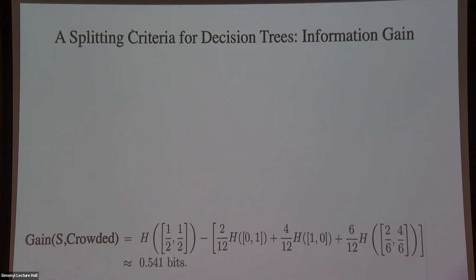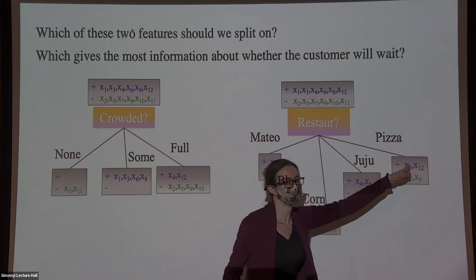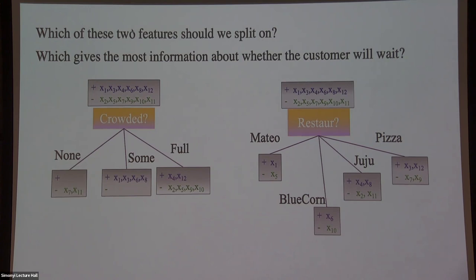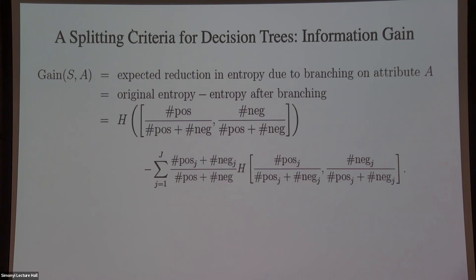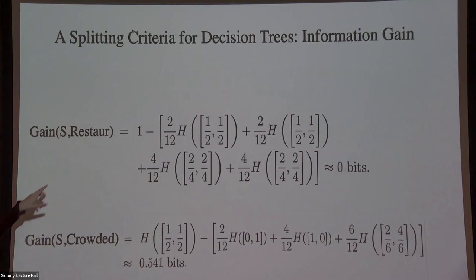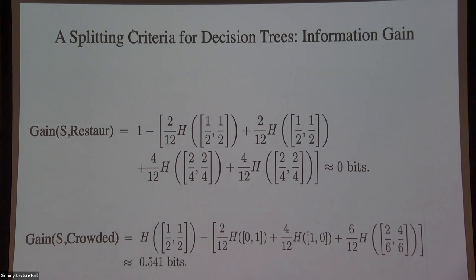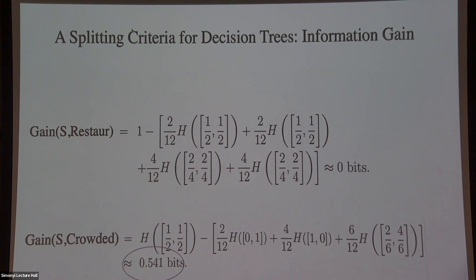Looking at the other possible split — where it's half and half every time — the information gain is zero bits, which you already know. Making that split gains no information at all. As a sanity check, plugging in those numbers confirms zero bits. Now we have a number that tells us which split to do: the one that actually reduces entropy a lot when we make it.